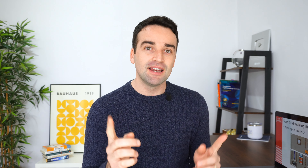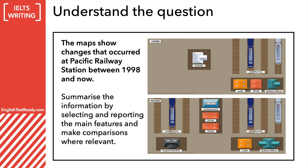So the first thing you've got to do is identify what they are asking you to describe. The next thing you can do is to understand the question. The questions are quite similar, but there are some important individual details in each question. So this is what the question looks like on the IELTS test. The bottom paragraph is always the same — it says: summarize the information by selecting and reporting the main features and make comparisons where relevant. That will never change. However, the top part is what we need to focus on. This question says: the maps show changes that occurred at Pacific Railway Station between 1998 and now. So you need to identify what the map is generally showing, then read the question and understand it.